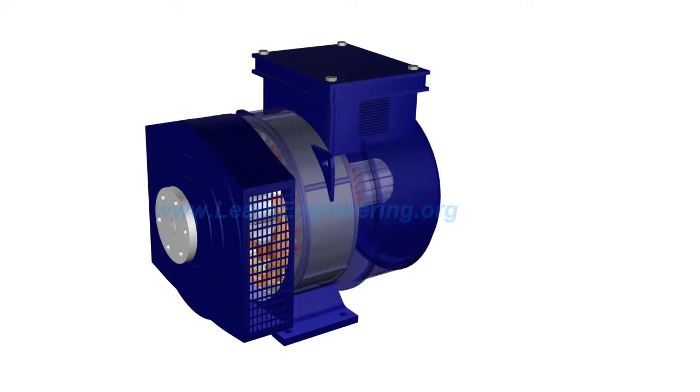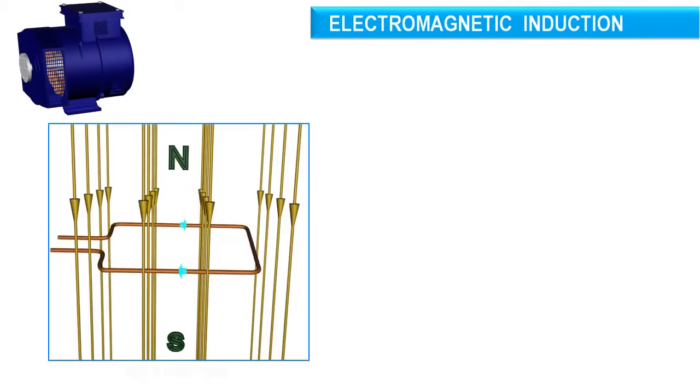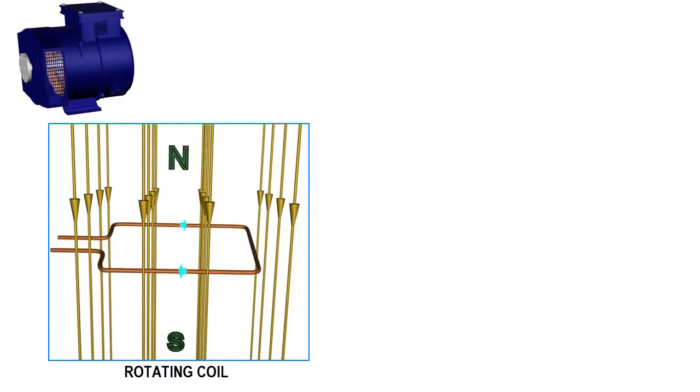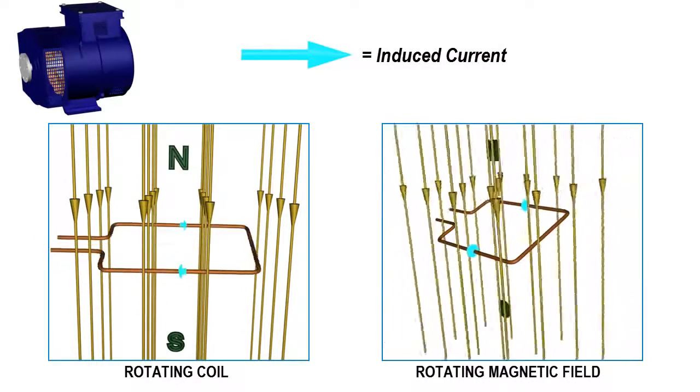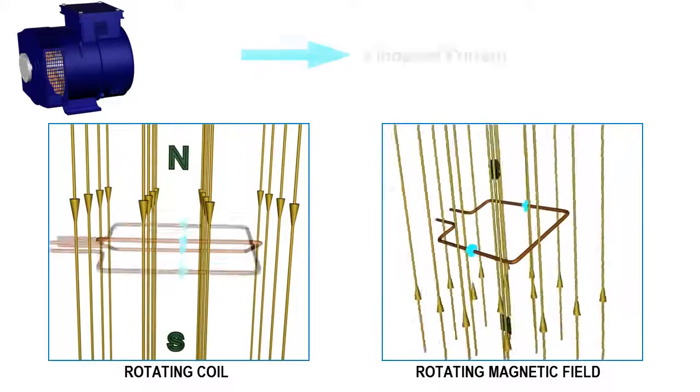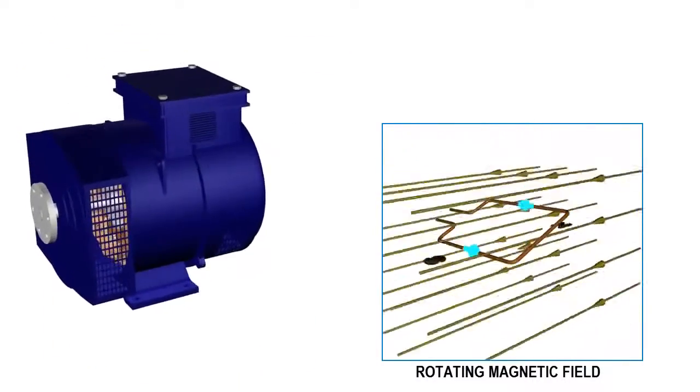Electricity is produced in alternators by electromagnetic induction. To generate electricity in a coil, either the coil should rotate with respect to a magnetic field, or a magnetic field should rotate with respect to the coil. In the case of alternators, the latter approach is used.